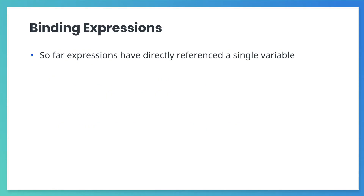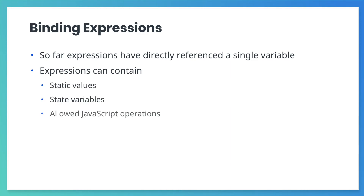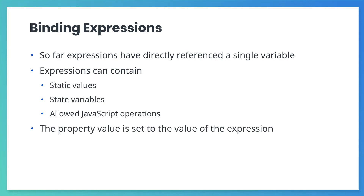So far, to set the value of a bound attribute, we've used basic expressions that directly reference a single state variable. We can also use elaborate expressions to set the value of a bound attribute. Expressions and bindings are a subset of JavaScript. They can contain static values such as numbers or strings, state variables, and a set of allowed JavaScript operations for common types like strings, arrays, and objects. The value of a bound attribute is equal to the value returned by evaluating the binding expression.